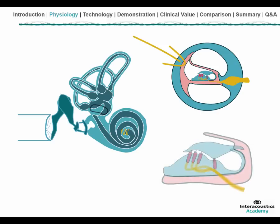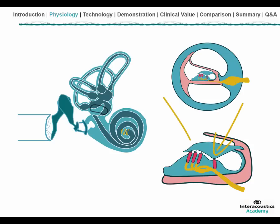If we zoom in a little bit further, we can see that in that membrane we have a row of inner hair cells and we have three rows of outer hair cells. It is the inner hair cells that get activated by the vibrations and that send signals over the nerve towards the brain.